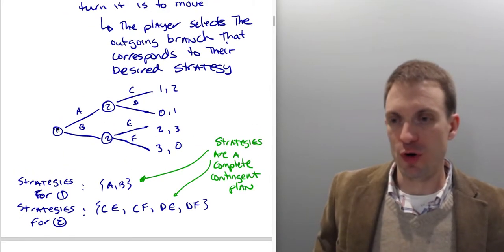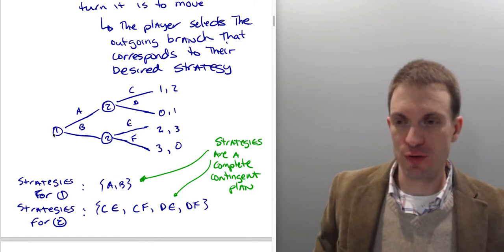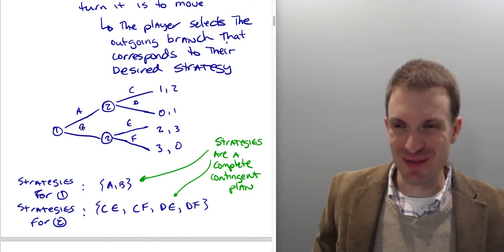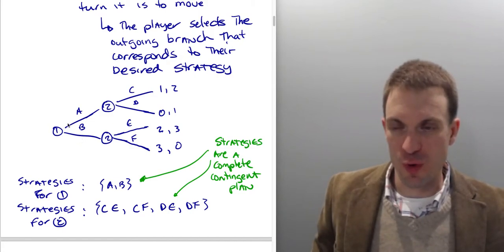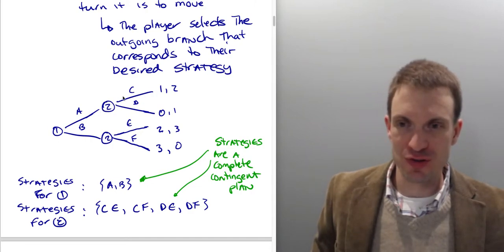So here's an example of a game. We have player 1, circled 1 right here. They're controlling the first node, the initial node, and then player 2. Here is player 2 after player 1 selected A. Here's player 2 moving after player 1 selected B. After 1 chooses A, then 2 makes a selection of either C or D. After 1 chooses B, 2 makes a selection of either E or F. And then here's the resulting payoffs. The first one is the payoff to player 1. The second one is the payoff to player 2.